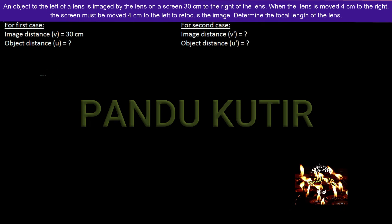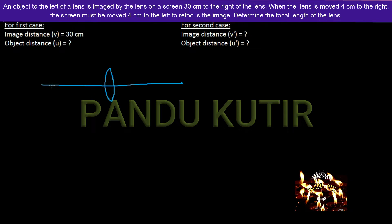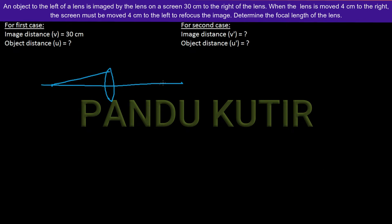First of all, I have a figure drawn. This is a lens. I have an object. This is a screen image. I have an image. The image distance and object distance are shown in the figure.